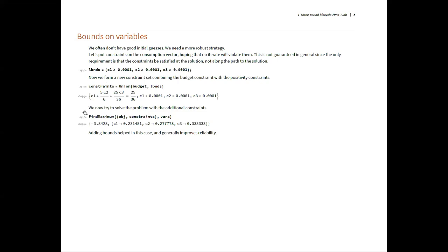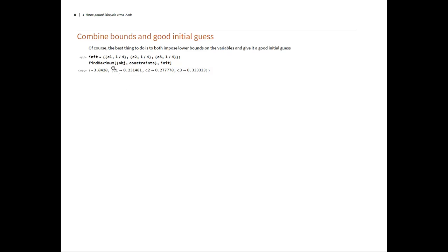The other thing to do is to put bounds on the variables — tell it consumption cannot go negative. Adding bounds works fine. You should always combine good initial guesses with bounds. Even this simple problem caused Mathematica 7 to fail, and a plain Newton's method would jump into infeasible territory. So those are some elementary points.